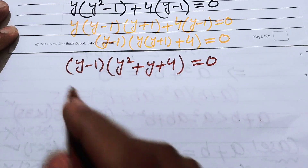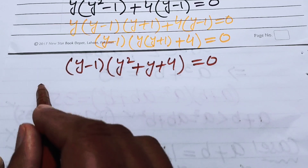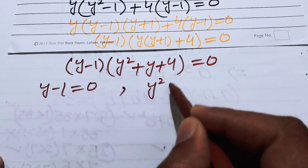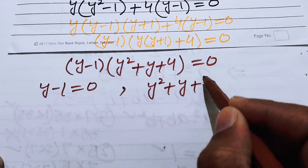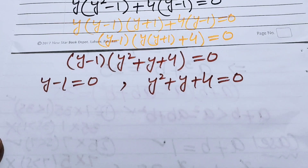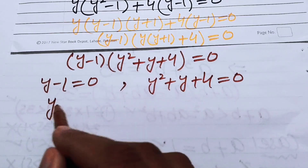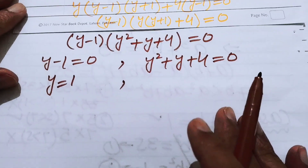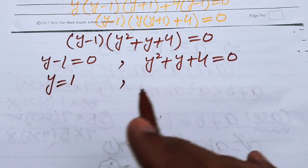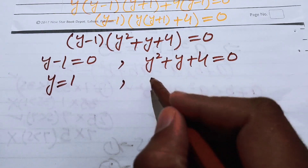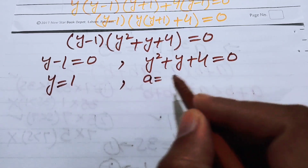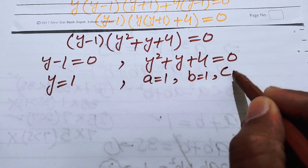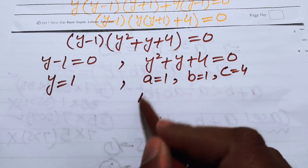We now have two cases. Case 1: y−1 = 0. Case 2: y²+y+4 = 0. For Case 2 we check whether real roots exist using the discriminant, identifying coefficients a = 1, b = 1, c = 4.